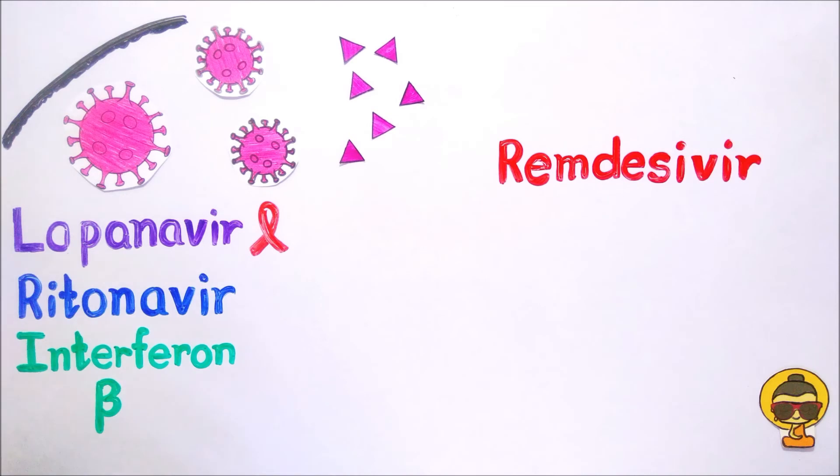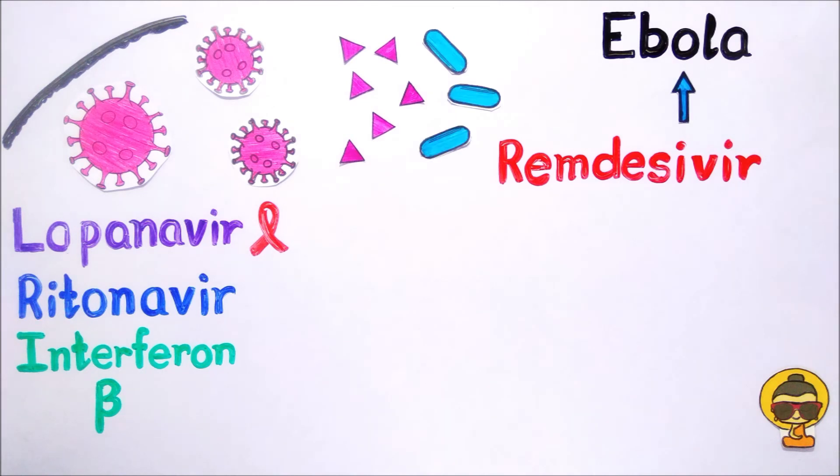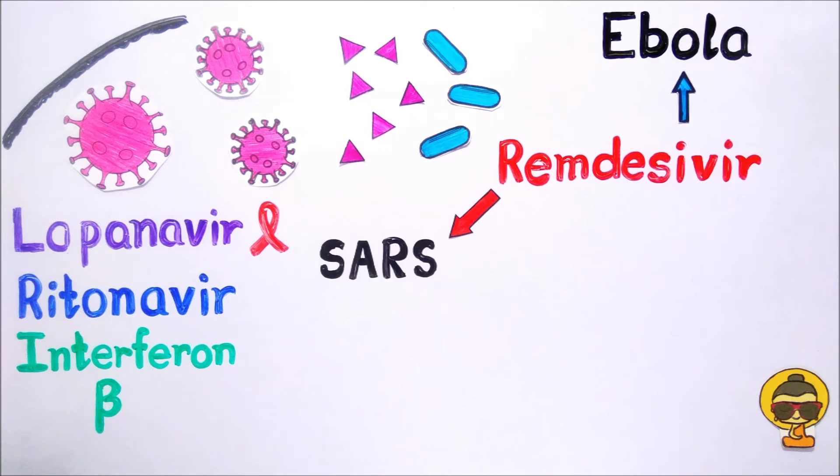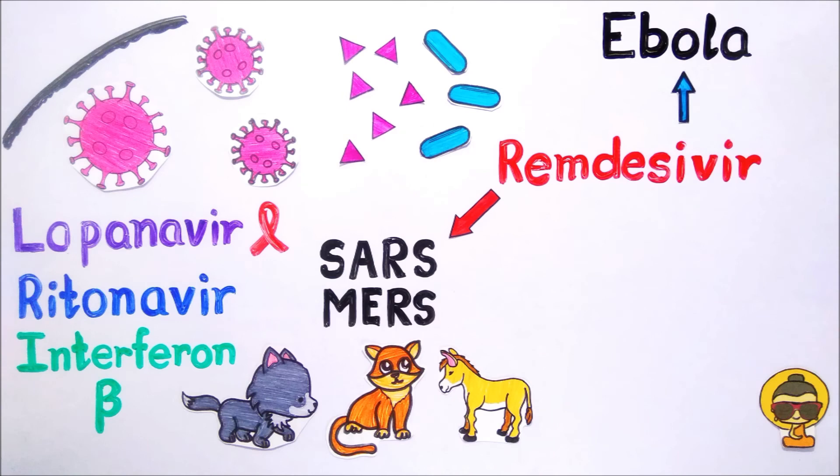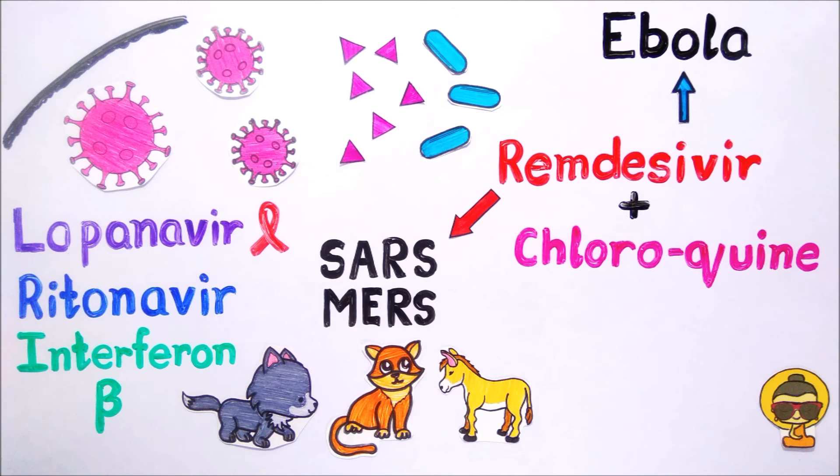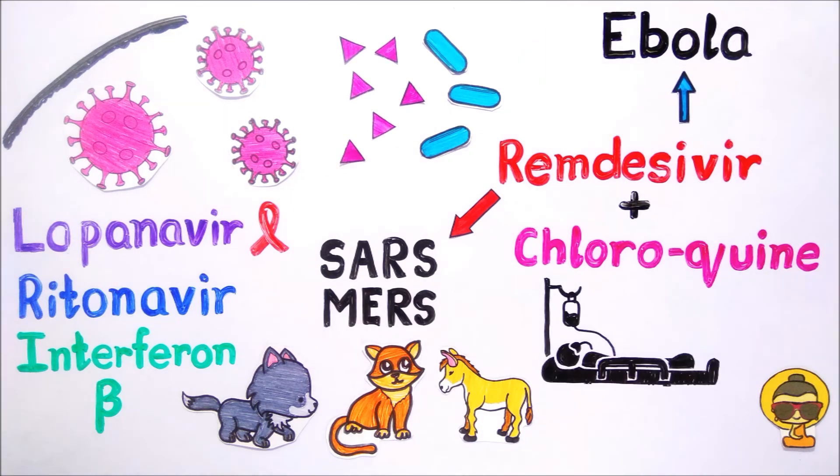Another medicine, remdesivir, used in the treatment of Ebola is currently being used in the treatment of COVID-19. It also targets some key enzymes used in the replication process of coronavirus. Remdesivir has already been used successfully in the treatment of SARS and MERS outbreaks in animals. Doctors are also using combinations of remdesivir and chloroquine to halt the virus replication process. It has also been observed that remdesivir is really effective in saving critically ill COVID patients.